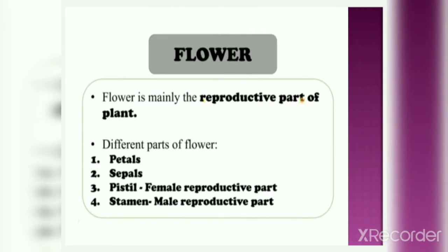Flower is mainly the reproductive part of plant. Different parts of flowers are petals, sepals, pistil, and stamen. Pistil is the female reproductive part of flower and stamen is the male reproductive part of flower.